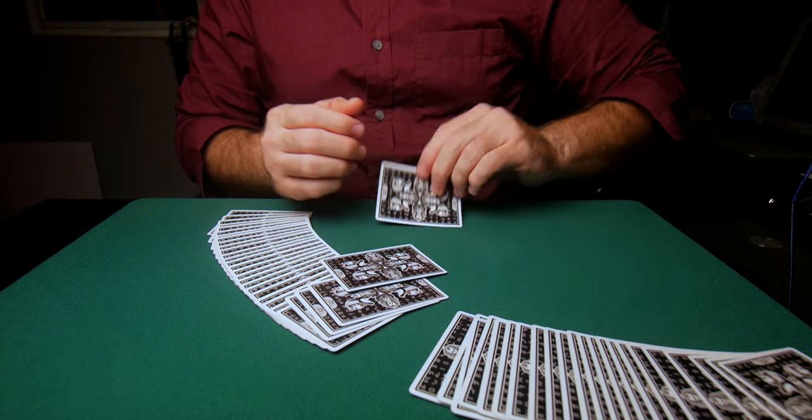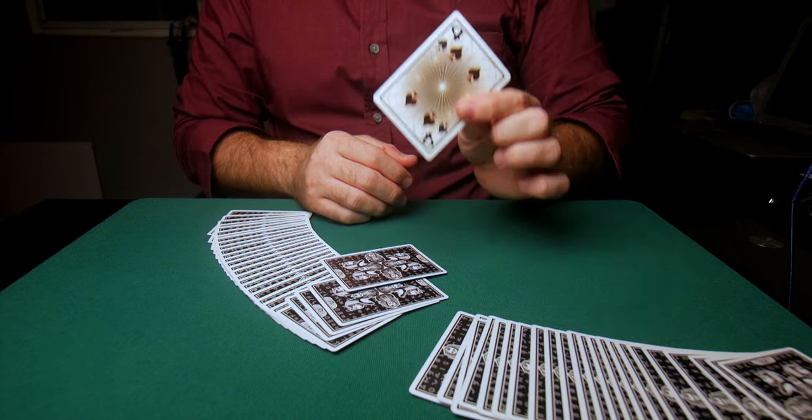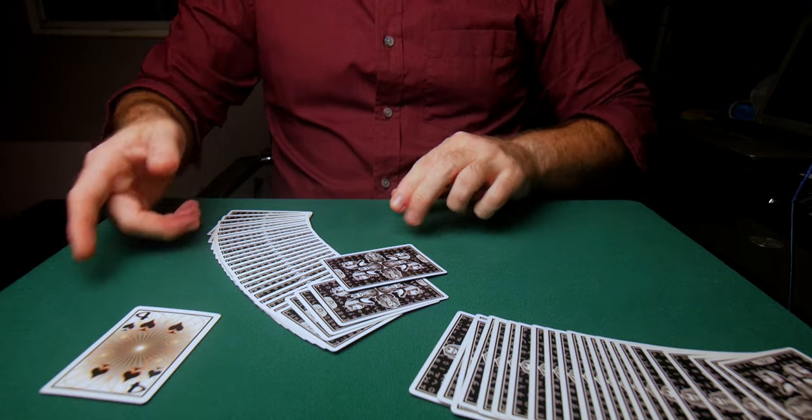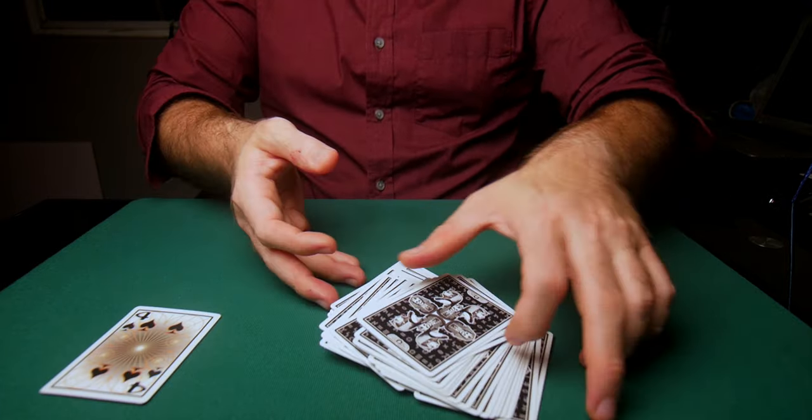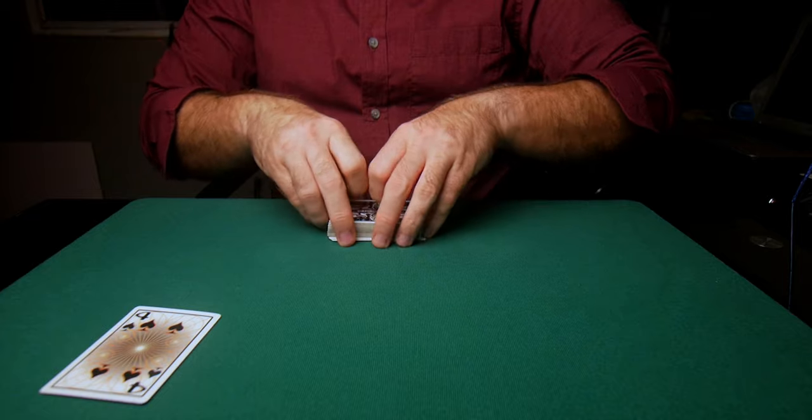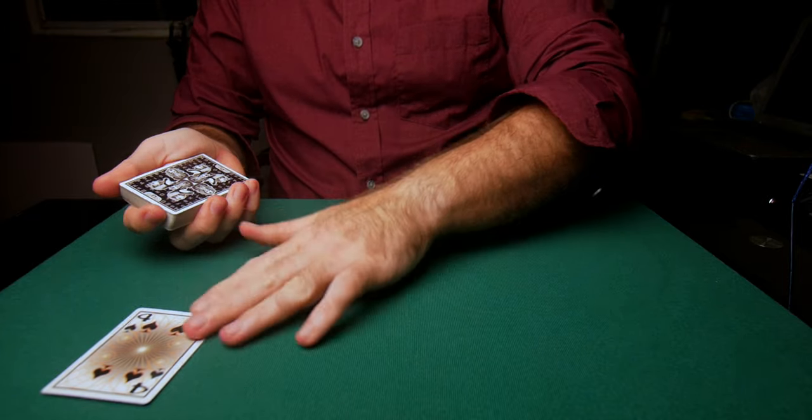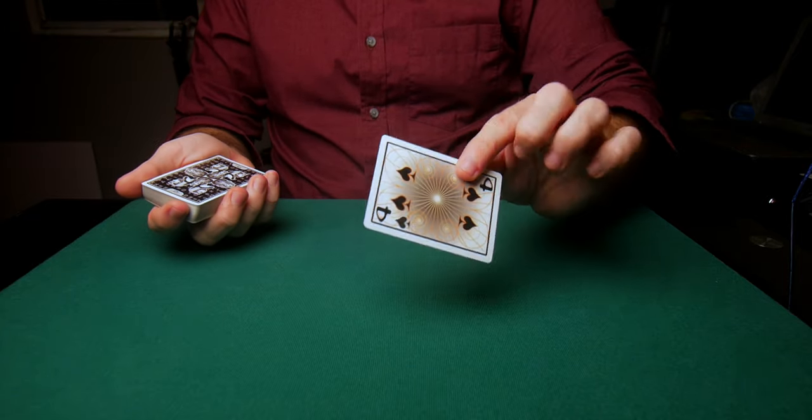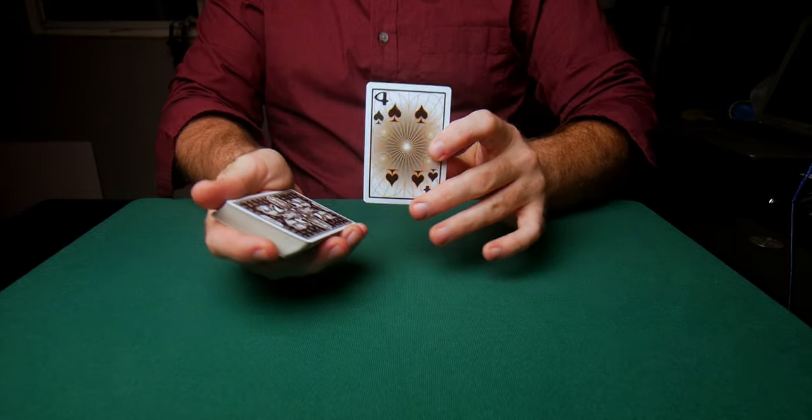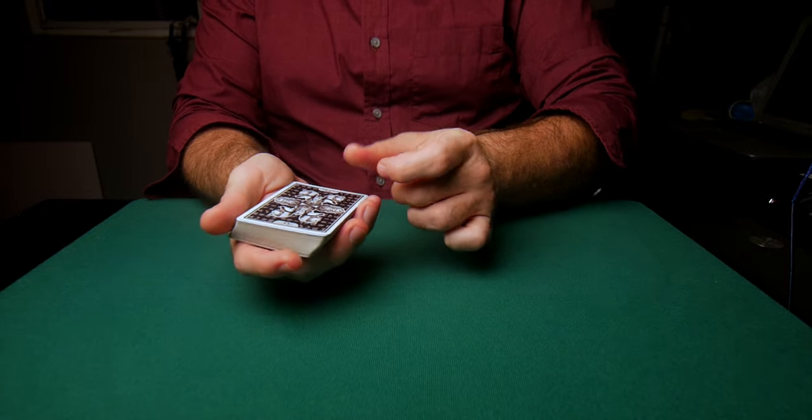Let's say the spectator randomly chooses this card, the four of spades. You of course do not look at the card. You don't need to. Once the spectator has seen the card, he's going to give it back to you and you're going to take the card and place it on top of the deck.